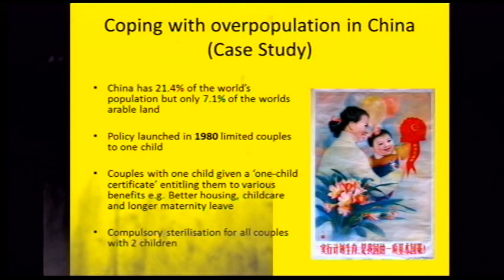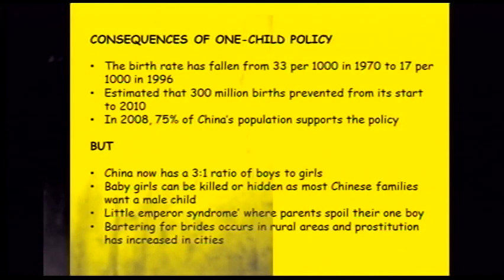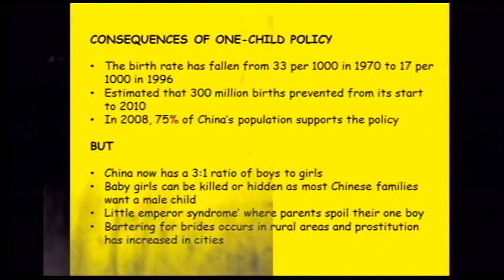Coping with overpopulation: in China, they had a huge population creating lots of pollution and not enough space for everybody. So in 1980, they introduced the one child policy, which limited couples to having only one child. Couples with one child were given benefits like better housing, childcare and longer maternity leave. If you had more than one child, you were penalised in these areas and fined. Compulsory sterilisation was enforced for all couples with two or more children. The birth rate fell from 33 per 1,000 in 1970 to 17 per 1,000 in 1996, and an estimated 300 million births have been prevented. 75% of China's population thinks the policy is a good idea.